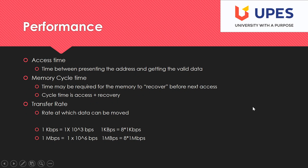Now talking about the performance of a memory system. Access time is one measure of performance. It is the time between presenting the address and getting valid data — from when the CPU generates a particular address until you receive the data.